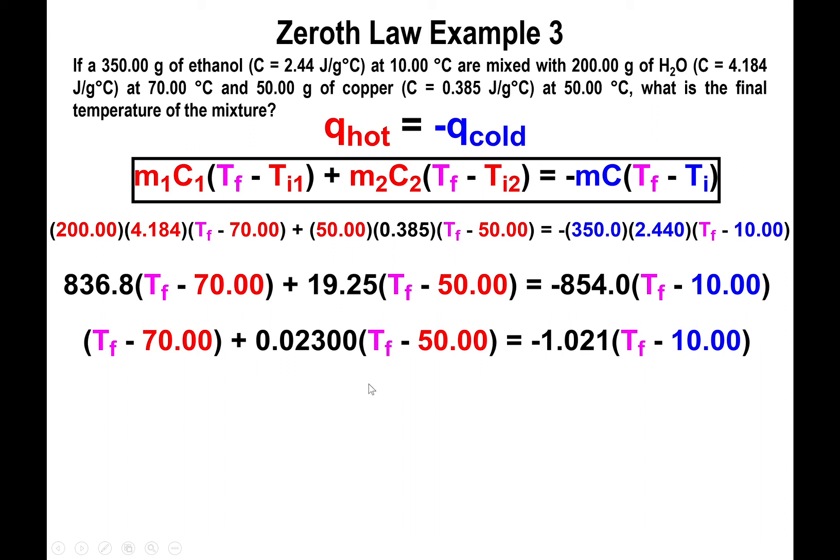All right, so now at this point you have no choice but to distribute. So we're going to multiply 0.023 by T_f and by negative 50, and we're going to multiply negative 1.021 by T_f and negative 10. And this will yield the following numbers: T_f minus 70 plus 0.023 T_f minus 1.150, and that will equal negative 1.021 T_f plus 10.21.